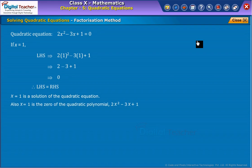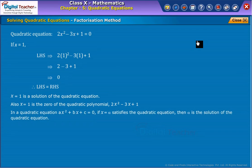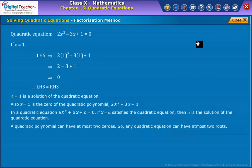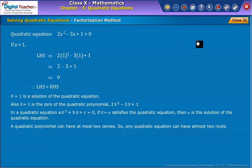Also, x equal to 1 is a zero of the quadratic polynomial 2x squared minus 3x plus 1. In a quadratic equation ax squared plus bx plus c equals 0, if x equal to alpha satisfies the quadratic equation, then alpha is the solution of the quadratic equation. We already learned that any quadratic polynomial can have at most two zeros; similarly, any quadratic equation can have at most two roots, since zeros in quadratic polynomials are equal to roots in quadratic equations.